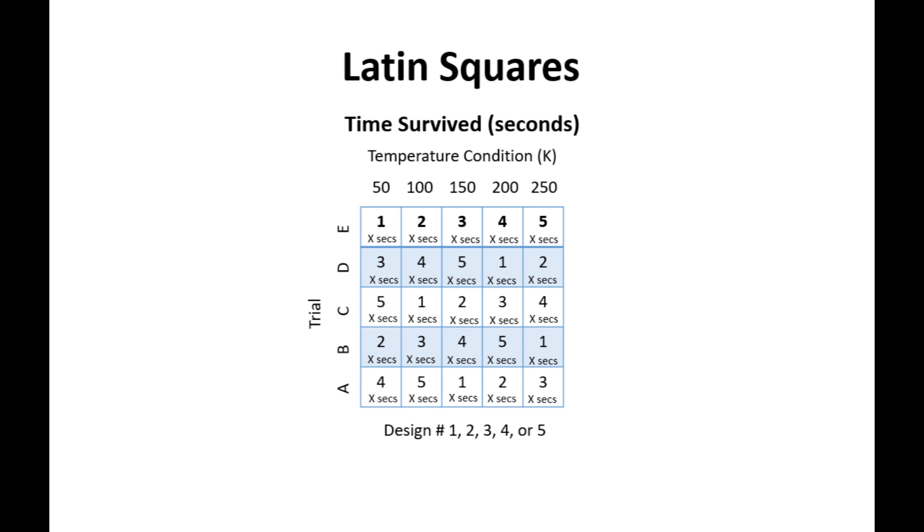Now what we are searching for is the time survived or however long an experiment continued to produce a desired outcome in a matter of seconds. We see the value in the top left square is calculated by combining these three conditions: trial E with a temperature of 50 degrees Kelvin using design one.